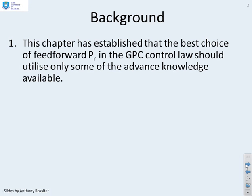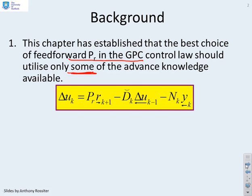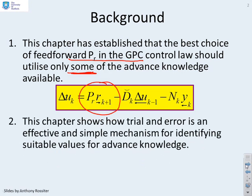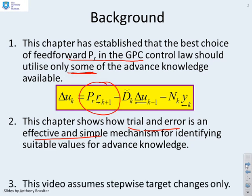The chapter so far has established that the best choice of feedforward in a GPC control law should usually utilize only some of the advanced knowledge of the target available but not all of that information. This chapter shows how trial and error is actually an effective and simple mechanism for identifying suitable values for advanced knowledge. We're going to concentrate on stepwise target changes only.